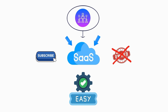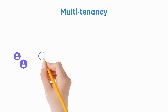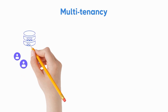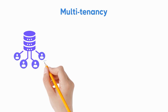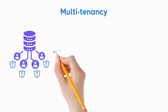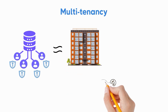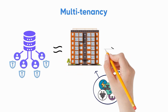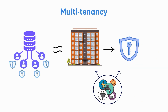This model is built on the principle of multi-tenancy, where multiple customers or tenants share the same underlying infrastructure, such as servers. However, each tenant's data and configurations are strictly isolated, ensuring privacy and security. It's much like separate apartments in the same building — tenants share the overall structure and utilities, but maintain their own private, secure spaces.